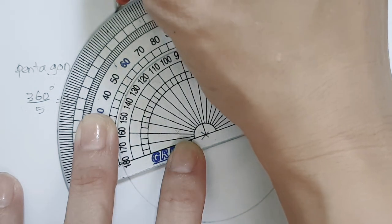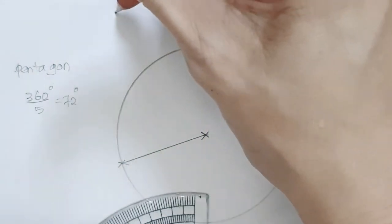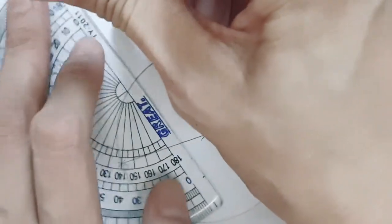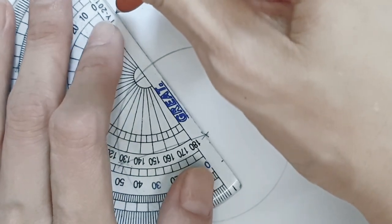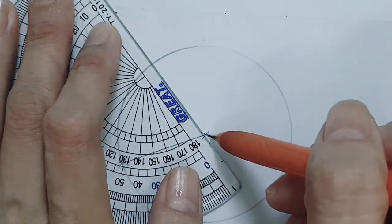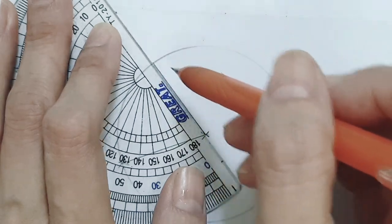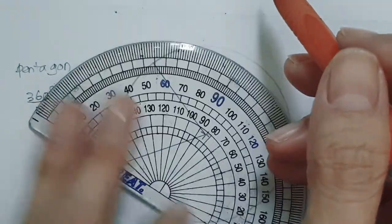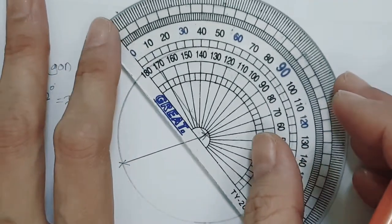Okay, so this is our 72. Join to the center of the circle. And this will be our baseline to measure the next 72 degrees.